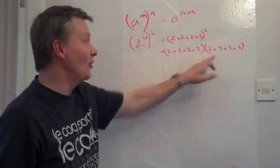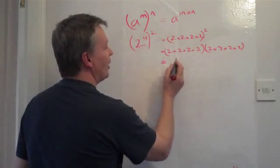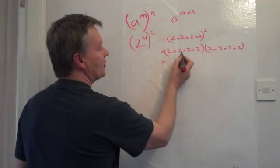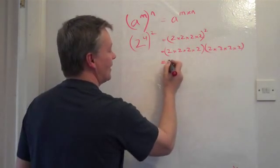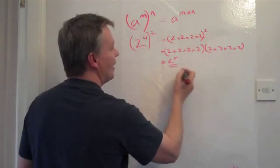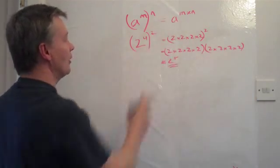So I can write it out longhand and it's going to end up with 2 to the power of 1, 2, 3, 4, 5, 6, 7, 8. 2 to the power of 8. And that proves this law.